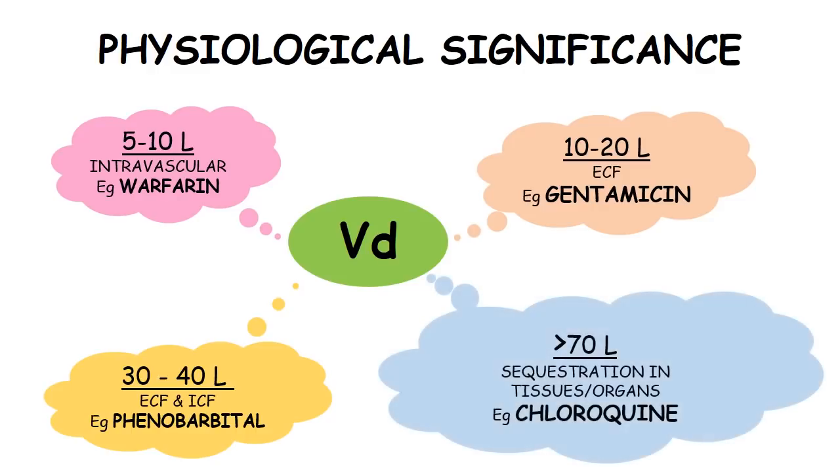And lastly, if the volume of distribution is very high, that is above 70 liters, then probably the drug is getting sequestrated in some tissue or organs. For example, chloroquine gets accumulated in liver, which accounts for its high volume of distribution.